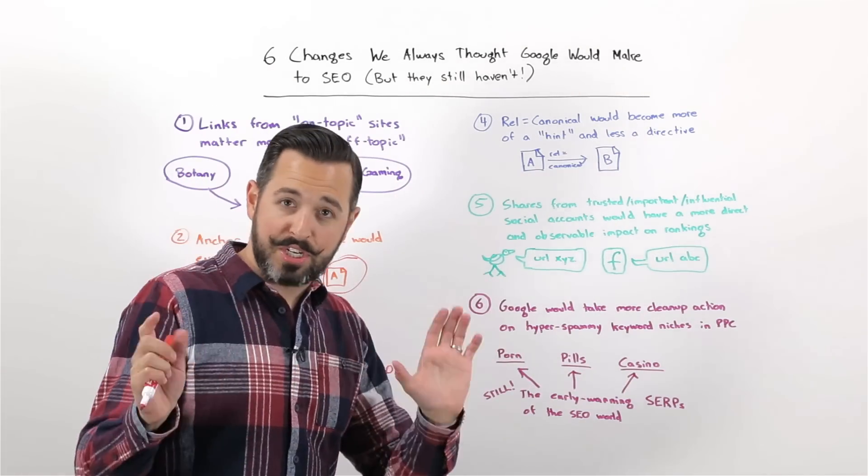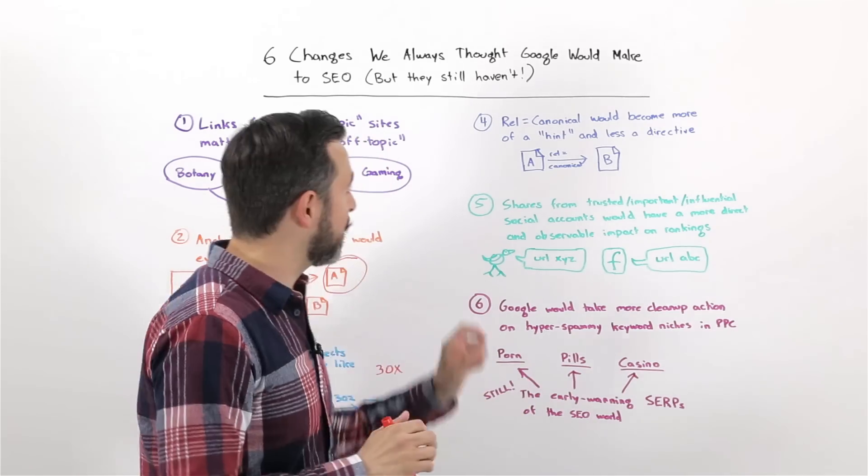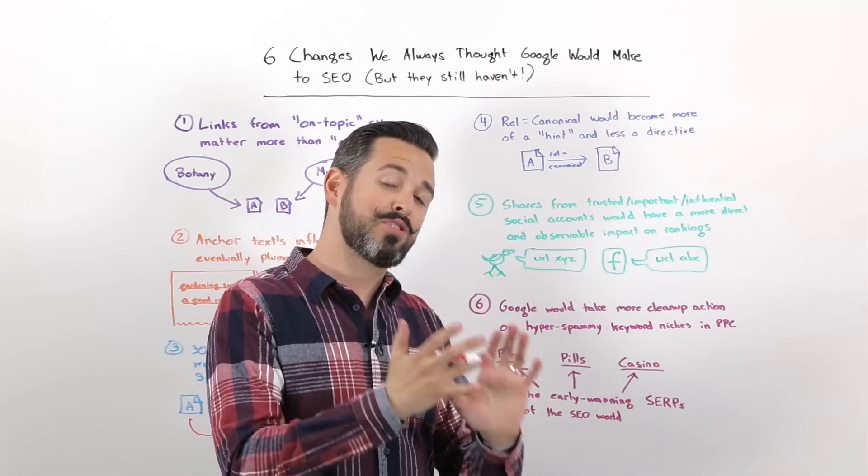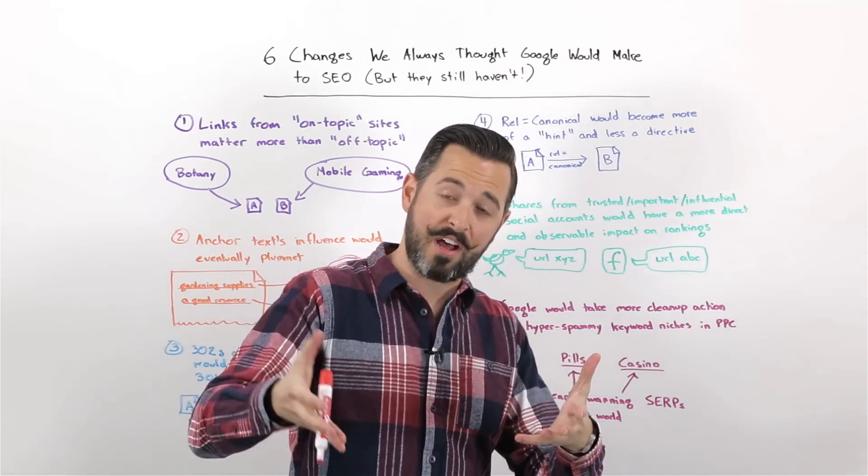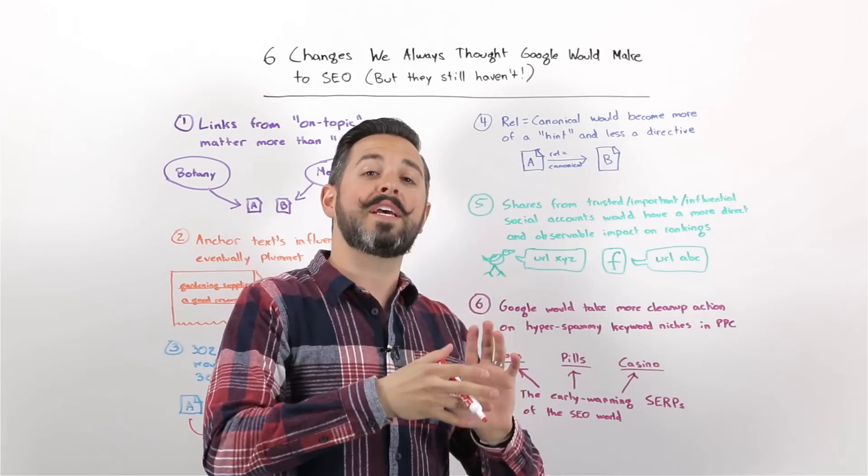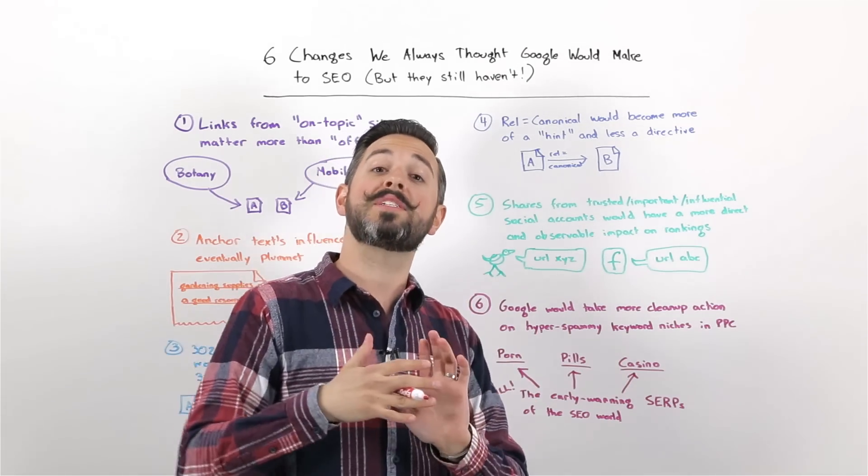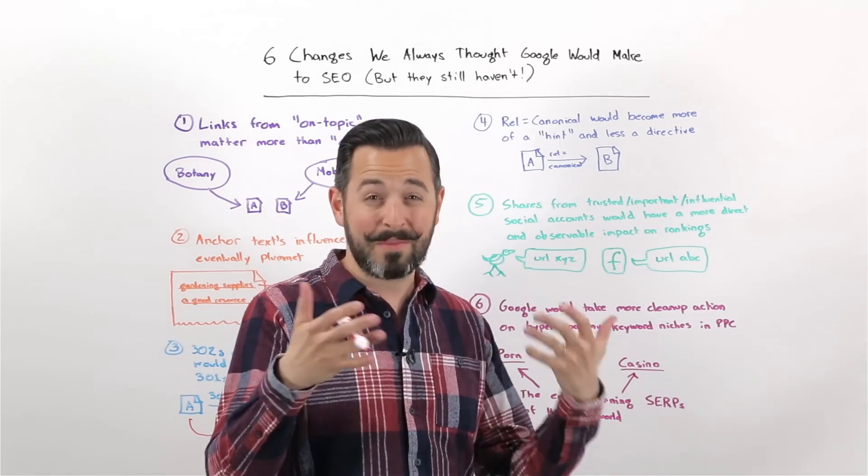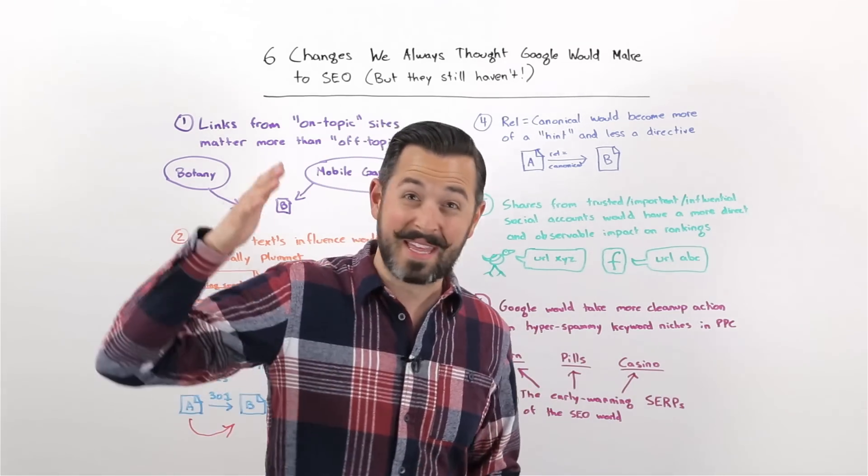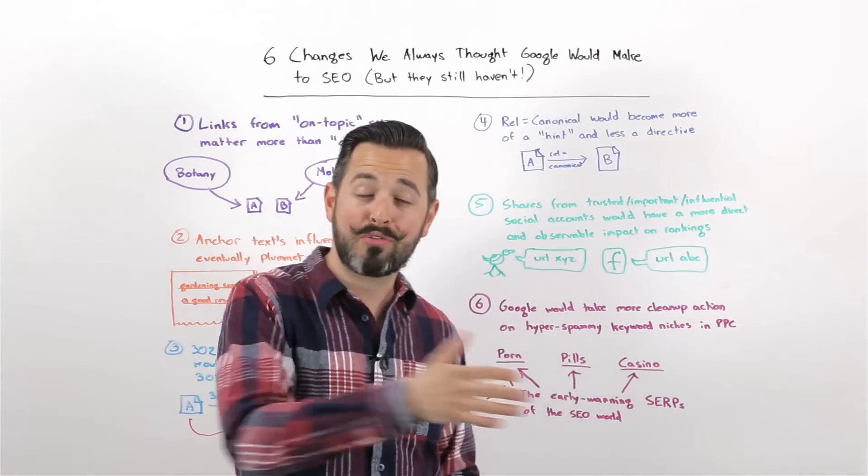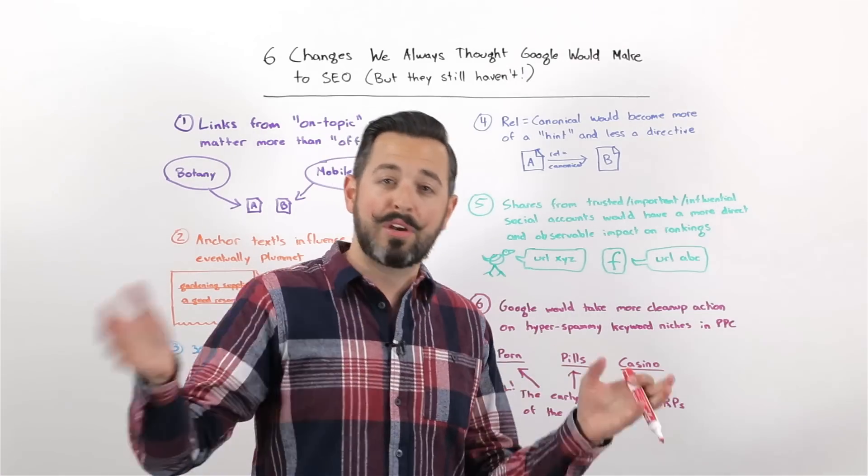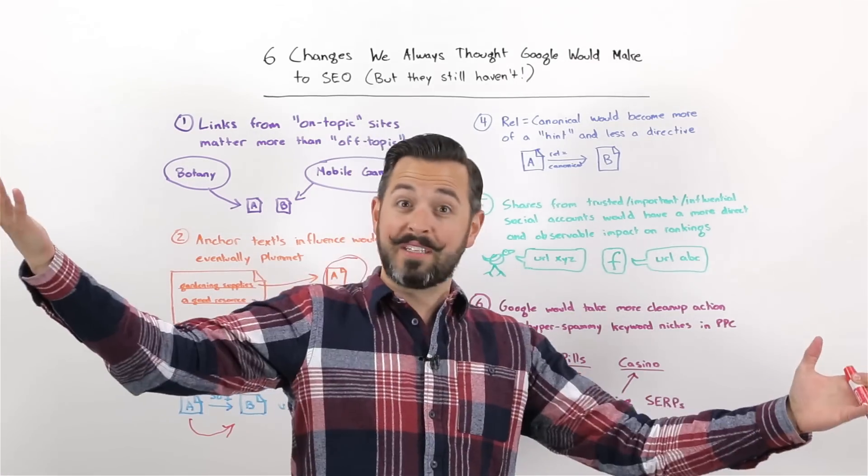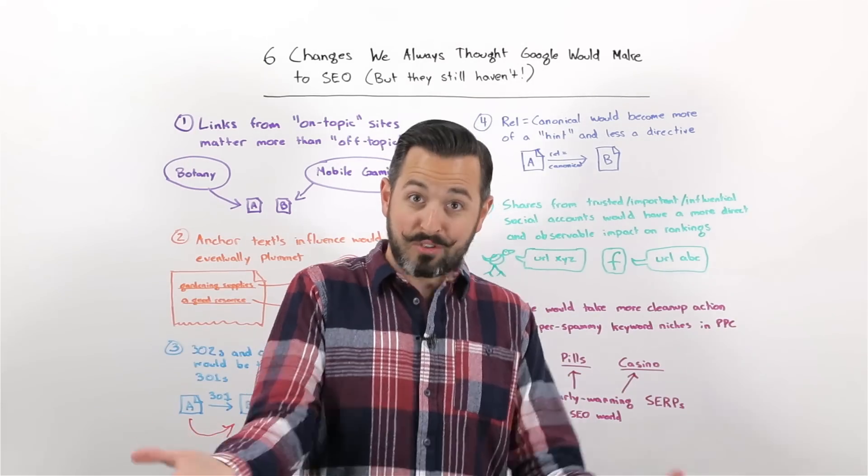And speaking of nudges and hints versus directives, Rel Canonical's been an interesting one. So when Rel Canonical first launched, what Google said about Rel Canonical is, Rel Canonical is a hint to us, but we won't necessarily take it as gospel. And yet, every test we saw, even from those early launch days, was, man, they are taking it as gospel. You throw a Rel Canonical on a trusted site accidentally on every page and point it back to the home page, Google suddenly doesn't index anything to the home page. It's crazy.